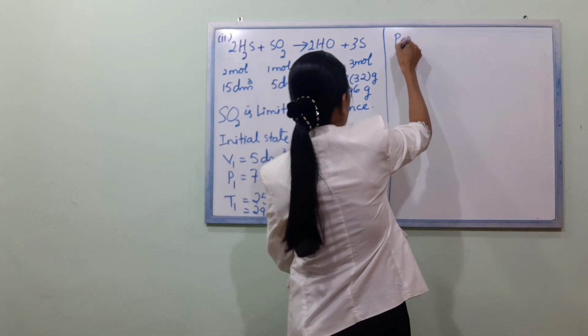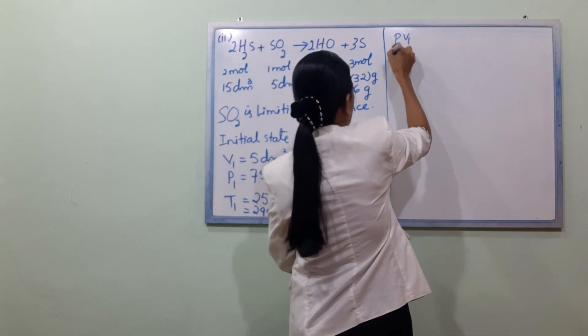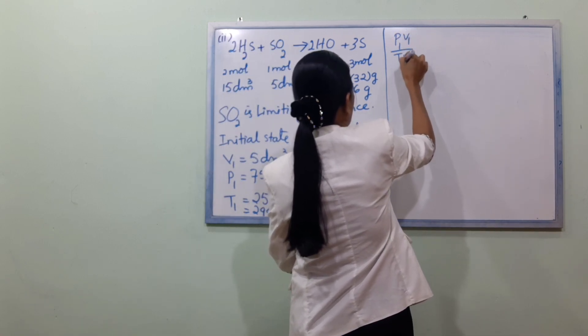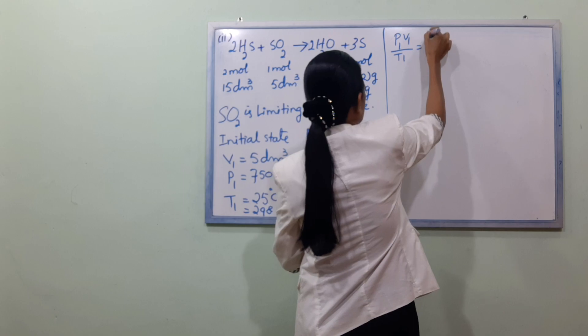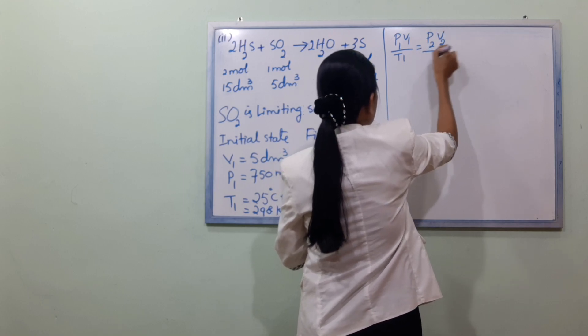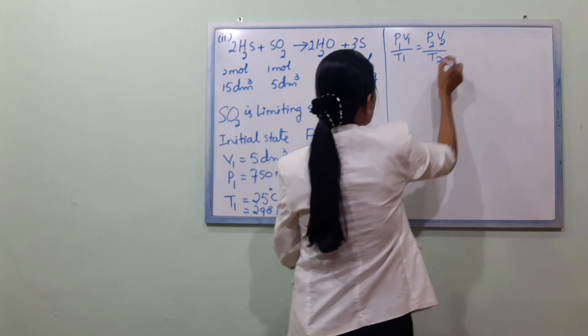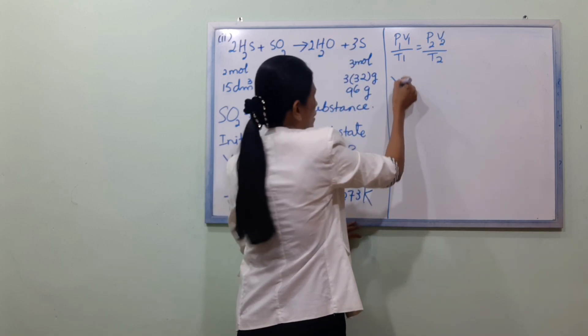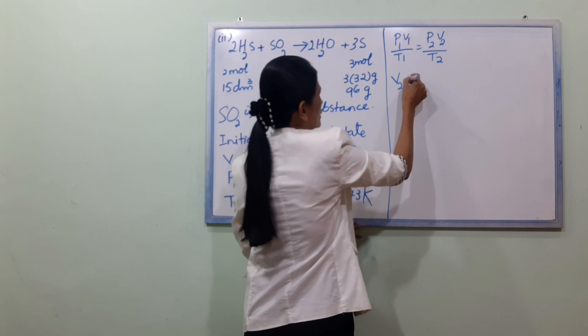Using the combined gas law: P1V1 divided by T1 equals P2V2 divided by T2. Therefore V2 equals P1V1T2 divided by P2T1.